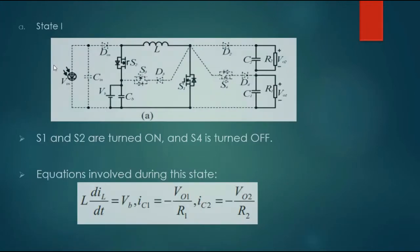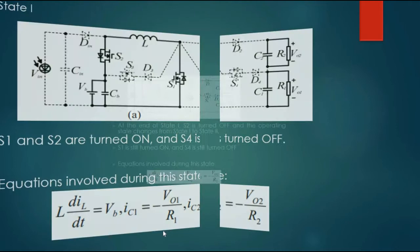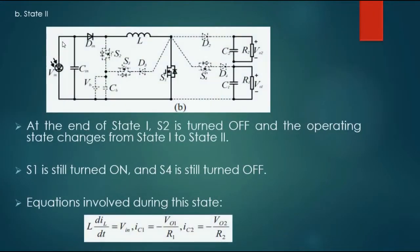State 1: S1 and S2 are turned on, and S4 is turned off. Equations are involved during this state. State 2: At the end of State 1, S2 is turned off and the operating state changes from State 1 to State 2. S1 is still turned on, and S4 is still turned off. Equations are involved during this state.